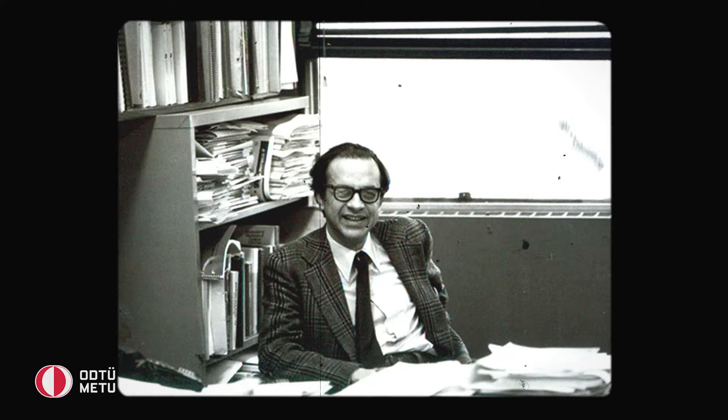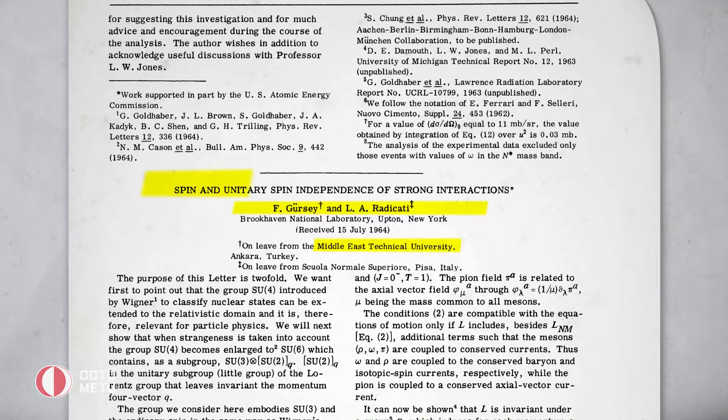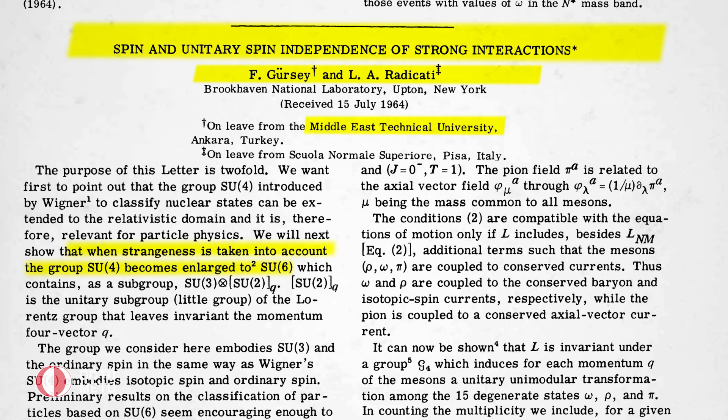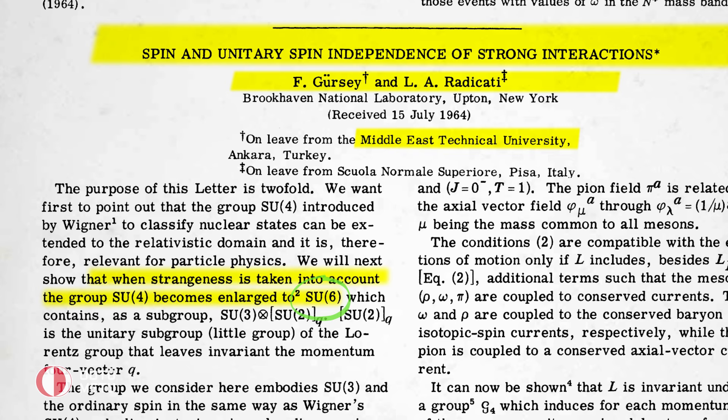The main idea underpinning the unified theory of particle interactions, or theory of everything, is basically to bring these four forces together. In 1964, Turkish physicist Fezal Gursey and his colleague Luigi Radicati wrote a paper on the unitary spin independence of the strong interaction, proposing a new approach by introducing the group SU-6 as an approximate symmetry of quarks at low energies. This paper represented the relativistic generalization of Wigner's SU-4 group and had an immediate impact on the physics of elementary particles.